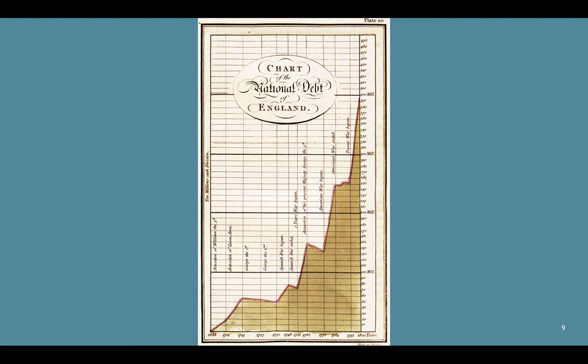Finally, here is the chart of the national debt of England. The labels are written vertically and are hard to read, but basically it shows different events happening at different periods of time. What you can see most distinctly is that over time the national debt becomes higher and higher.